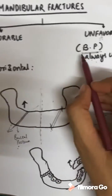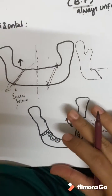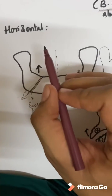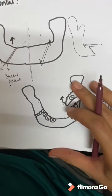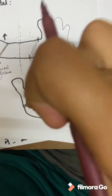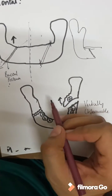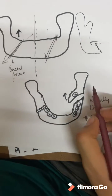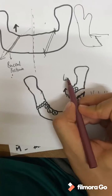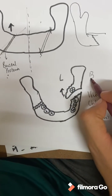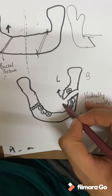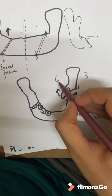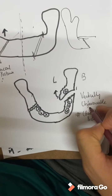We are seeing this on an OPG, which is why it is horizontal — favorable or unfavorable fracture. If you are seeing the occlusal view from the top, the same principle applies vertically. Unfavorable is buccal posterior. This is the lingual side, and this is the buccal side. If the fracture line is going buccally posterior, then it is a vertically unfavorable fracture.